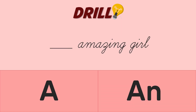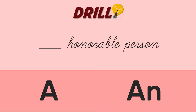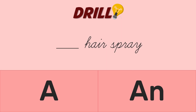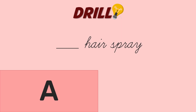Next example: blank honorable person. If you think the answer is A because it begins with the letter H, you are wrong. The correct answer is AN — an honorable person. The word 'honorable' begins with the vowel sound O because the H is silent. Next: blank heirloom. If you answered AN, you are correct. Heirloom begins with the vowel sound A, that's why we use AN. Next: blank hairspray. If you think the answer is A, you are correct. Hairspray begins with the consonant sound H, so we use the article A.